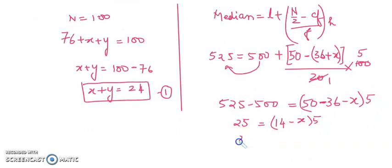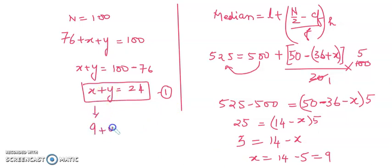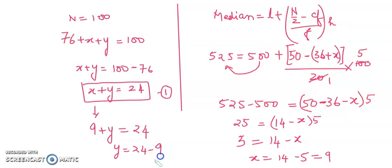Dividing both sides by 5: 5 equals 14 minus x. So x equals 14 minus 5, which is 9. Substituting x equals 9 into x plus y equals 24: 9 plus y equals 24, so y equals 24 minus 9 which is 15.